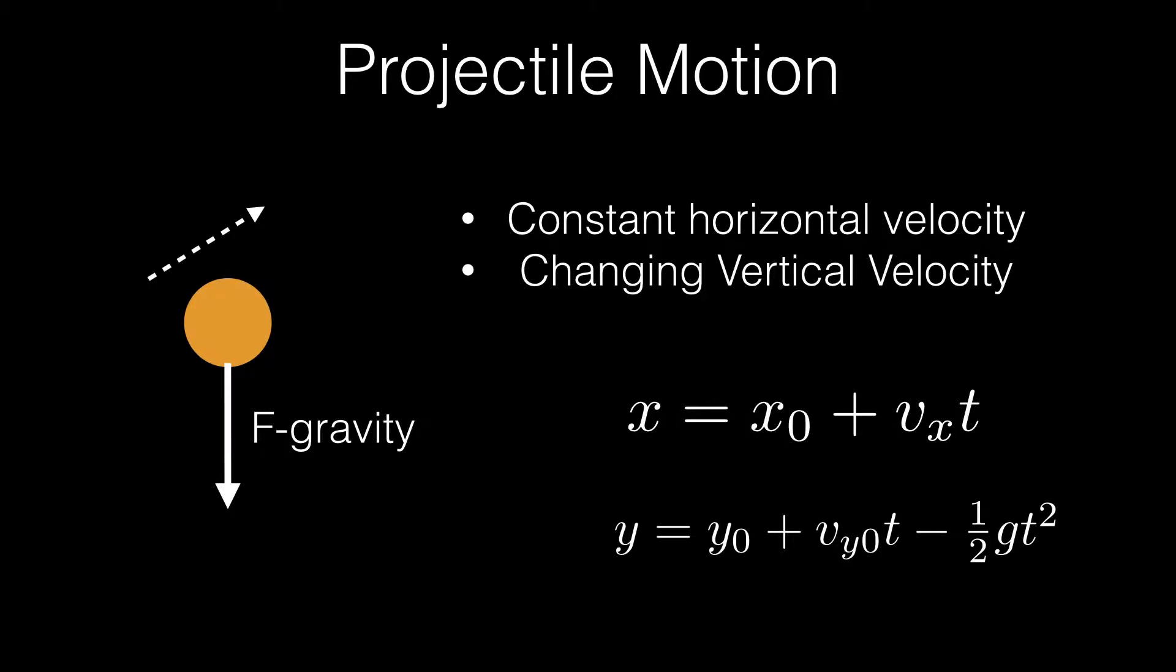In physics, if we have an object that is only acting in motion due to the gravitational force, then we call this projectile motion. And it will only have a vertical acceleration, and it will move in the horizontal direction with a constant velocity. Those are the two things that characterize projectile motion. And so we have these two kinematic equations that describe the motion in both the horizontal x direction and the vertical y direction.